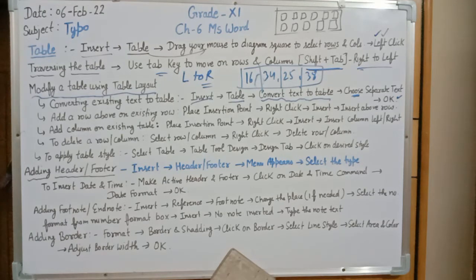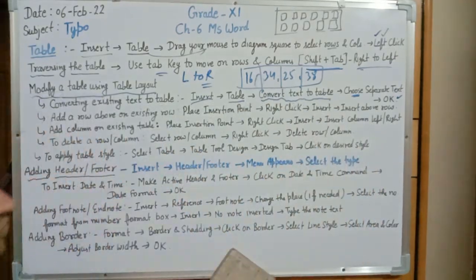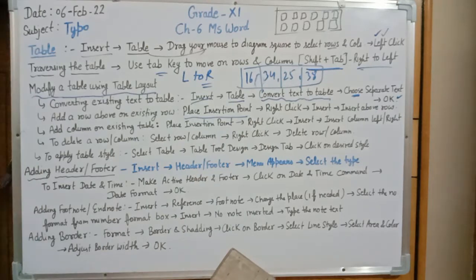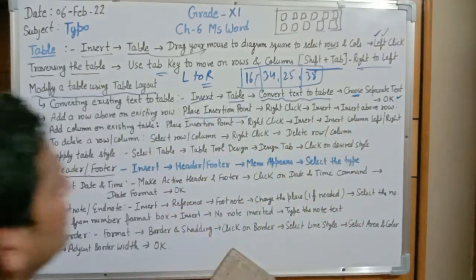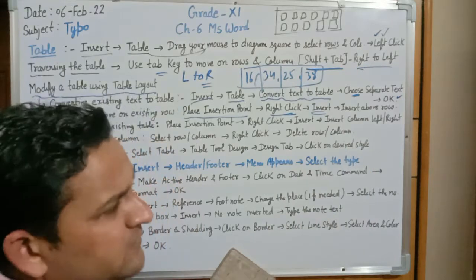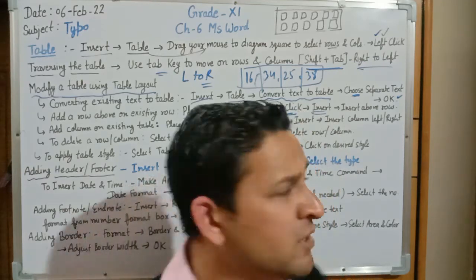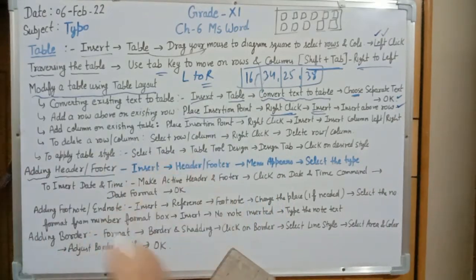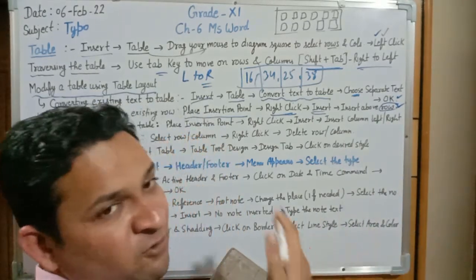To add a row above an existing row: place your cursor at the position where you want to insert the new row, then right-click. The Insert option will appear with choices — Insert Above Row, Insert Below Row, Insert Left Column, or Insert Right Column. Select 'Insert Above Row' to add a row just above the current position. For adding a column, the same concept applies — the only difference is you select Insert Left Column or Insert Right Column.